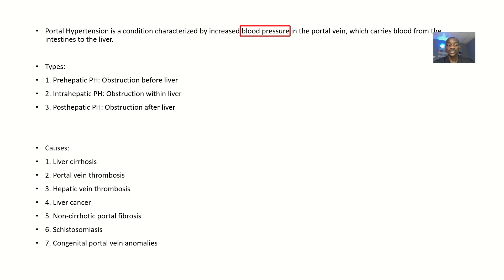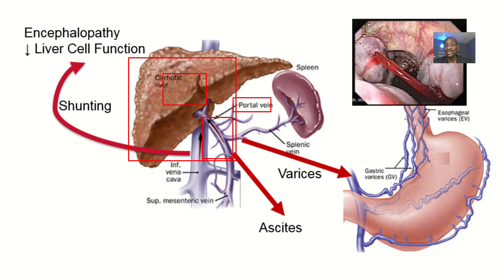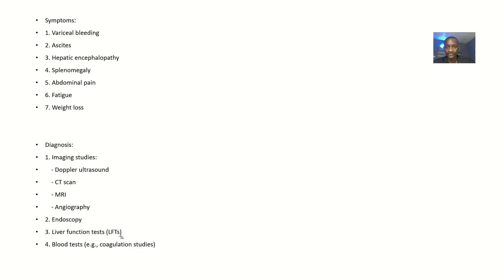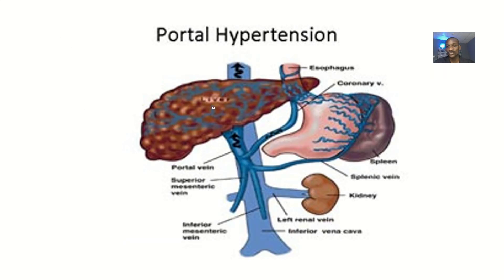Causes of portal hypertension include liver cirrhosis, portal vein thrombosis (a clot blockage), hepatic vein thrombosis, liver cancer, non-cirrhotic portal fibrosis, schistosomiasis infections, congenital portal vein anomalies, and increased blood flow to the liver through the portal vein.